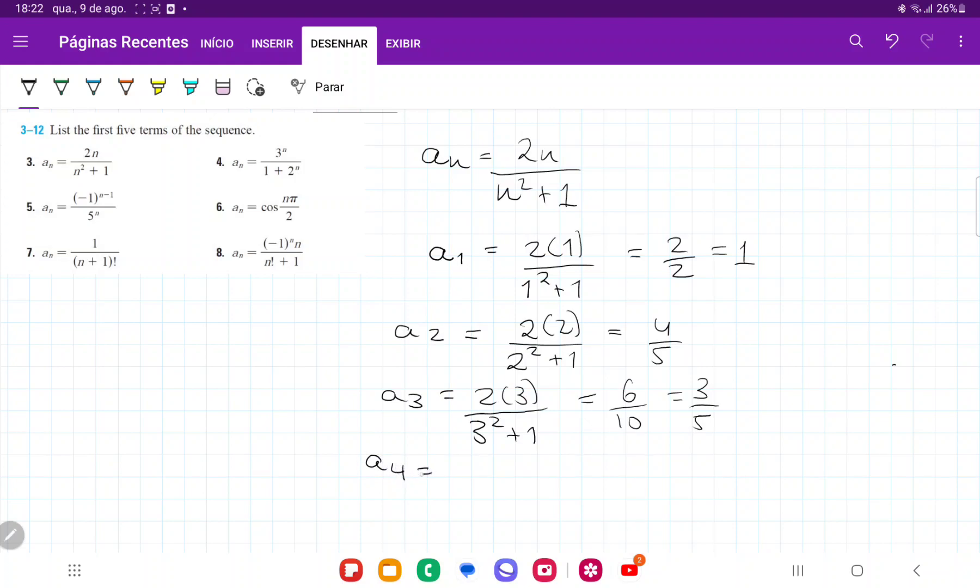For a4, we're going to have 2 times 4 over 4 squared plus 1, so that is going to be 8 over 17.